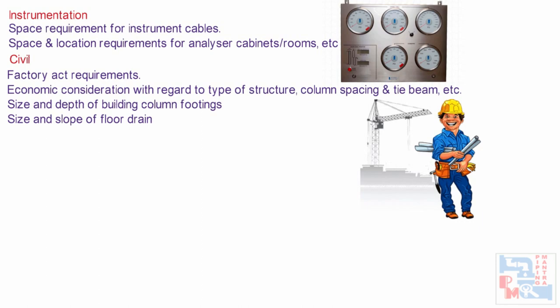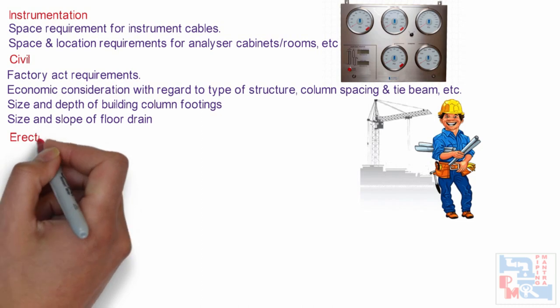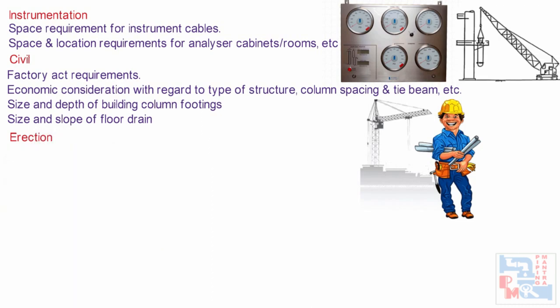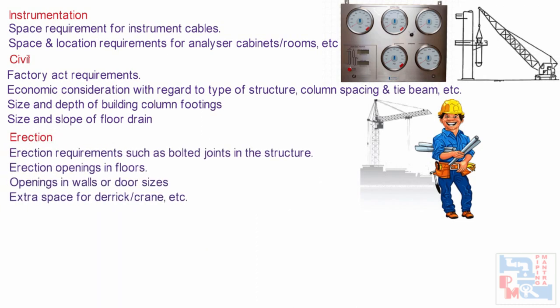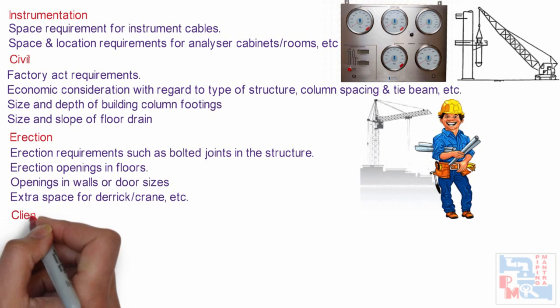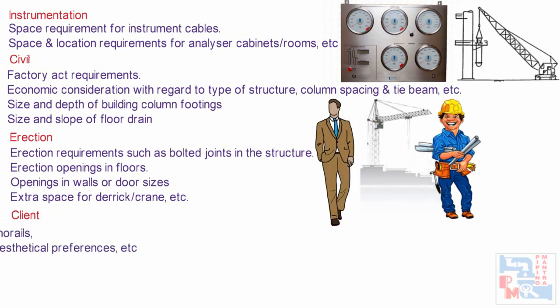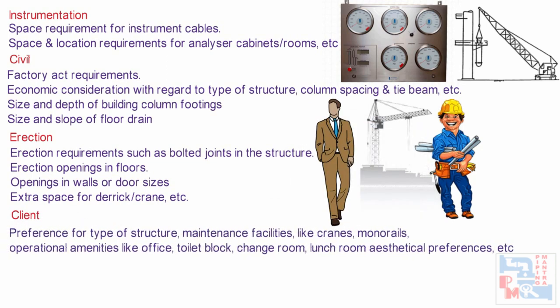From civil, we need factory act requirements, economic considerations with regard to type of structure, column spacing and tie beams, meeting process requirements, size and depth of building column footings, and size and slope of floor drains. We also need inputs like erection requirements such as bolted joints in the structure to be bolted at site, erection openings in floors, openings in walls or door sizes, and extra space for derrick or crane. From the client, we need preference for type of structure, and maintenance facilities like cranes and monorails.